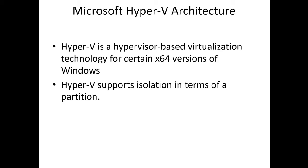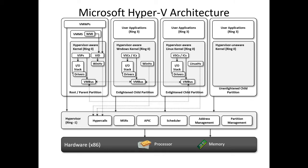Hyper-V is the process-specific virtualization platform that allows multiple isolated operating systems to share a single hardware platform. It supports isolation in terms of partitioning. In this diagram or architecture, we see we have a root or parent partition and many child partitions. A partition is a logical unit of isolation supported by the hypervisor in which operating systems execute.